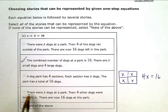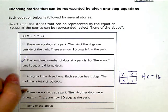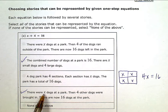Last one. There were x dogs at a park. Then 4 other dogs were brought in, so added to the dogs at the park. Now there are 16 dogs at the park. So this one fits as well, right? We're combining the dogs that were already there with the 4 new dogs that came, and now we have a total of 16 dogs. We're not going to mark none of the above, obviously, because we actually had some options that worked.